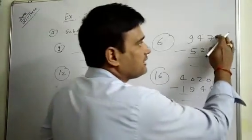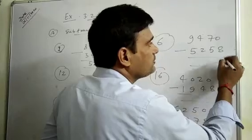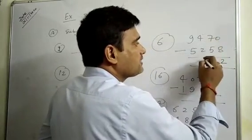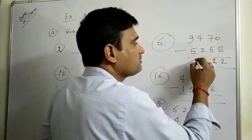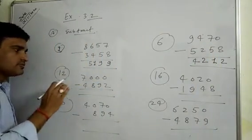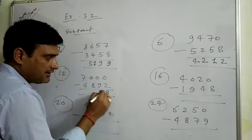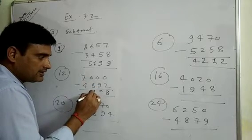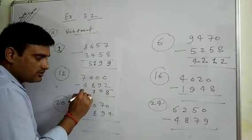Now question number 6: 9410 minus 8258. 10 minus 8 is 2, 6 minus 5 is 1, 4 minus 2 is 2, 9 minus 5 is 4. Answer: 4212. Number 12: 6992 minus 4810. 10 minus 2 is 8, 9 minus 9 is 0, 9 minus 8 is 1, and 6 minus 4 is 2. Answer: 2108.